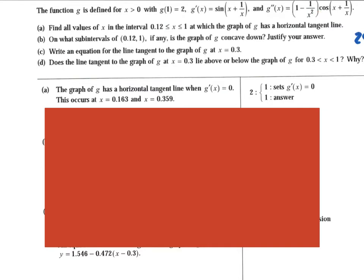So for part a, find all the values of x on this little tiny interval, 0.12 to 1, at which g has a horizontal tangent line. So the thing that I would have done is a horizontal tangent line means that the derivative equals 0. So anytime you have a derivative equals 0, you have a horizontal tangent line.